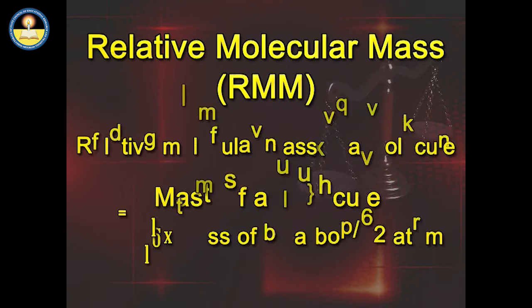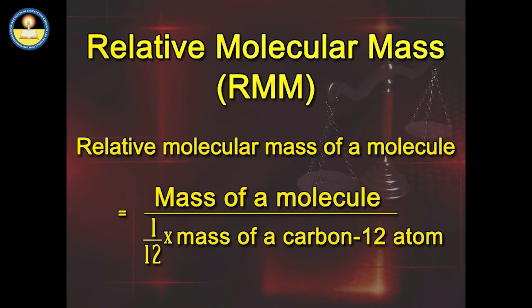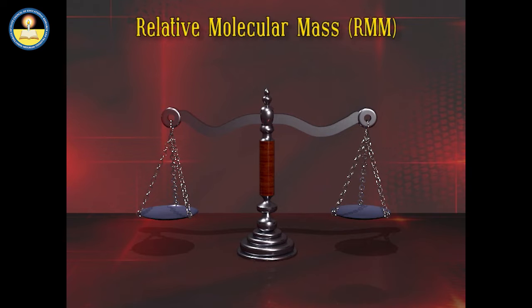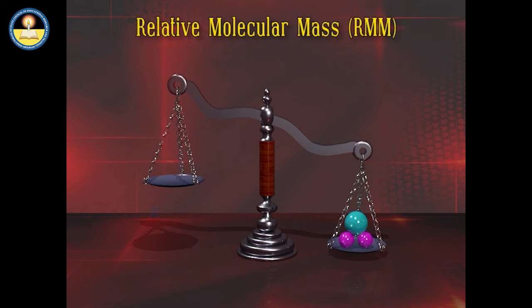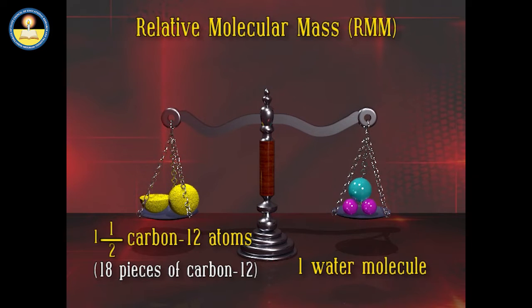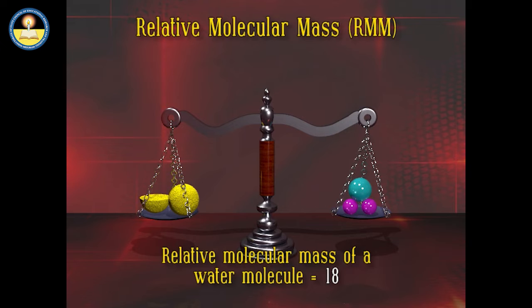The Relative Molecular Mass of a molecule equals the mass of a molecule divided by one-twelfth the mass of a carbon-12 atom. For a water molecule placed on a beam balance and balanced with carbon-12 atoms, we find we need one and a half carbon atoms, that is 18 pieces, meaning the relative molecular mass of a water molecule is 18.